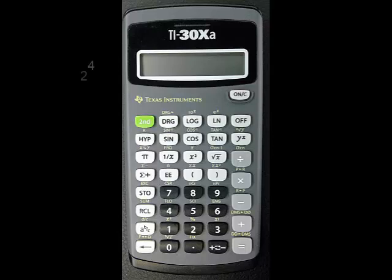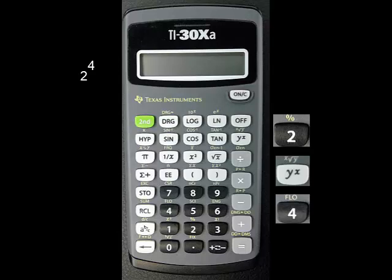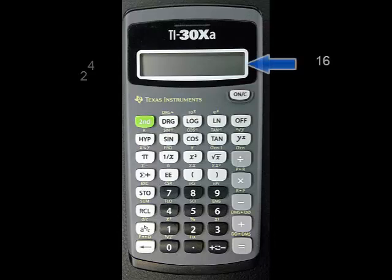For example, to calculate 2 to the fourth power, press 2, then y to the x, then 4, and finally, the equals key, because y to the x is a binary function. The answer should be 16.